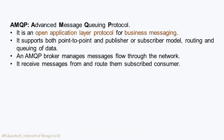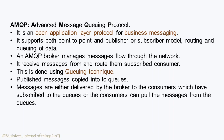AMQP — Advanced Message Queuing Protocol — is an open application layer protocol for business messaging. It supports both point-to-point and publisher-subscriber models, routing and queuing of data. An AMQP broker manages message flow through the network, receiving messages and routing them to subscribed consumers using a queuing technique. Published messages are copied into queues, and messages are either delivered by the broker to consumers which have subscribed to the queues, or consumers can pull messages from the queues.